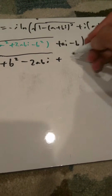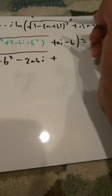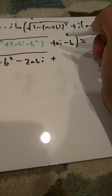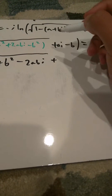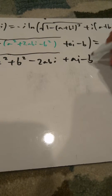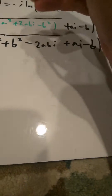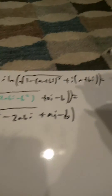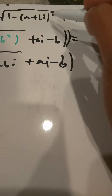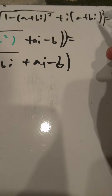And this equals negative i times ln of the square root of one minus a squared plus b squared minus 2abi, plus ai minus b. I don't need the parentheses there, so I'm going to erase them.